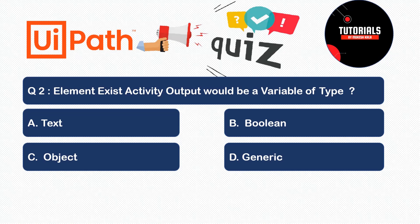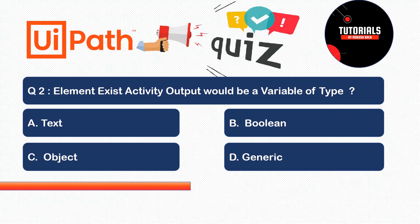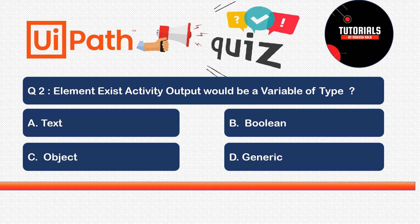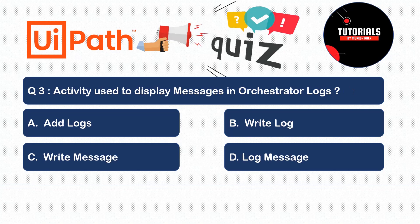Question 2: We have an activity in UiPath called Element Exist, which tells you whether an element is available or not. The question is: what type of variable does the Element Exist activity output? Is it A) Text, B) Boolean, C) Object, or D) Generic? The correct answer is Boolean — Element Exist will give you true if the element exists on the screen and false if it does not.